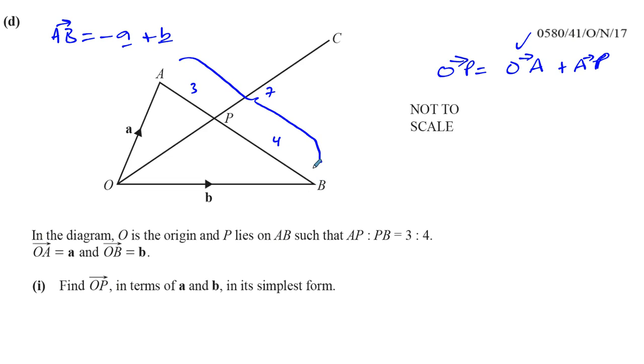Okay, and I know that A to P is a fraction of that. A to P is a fraction of A to B, and you can see the fraction of A to B that A to P is 3 parts out of a total of 7. So A to P is 3 out of 7 of what A to B is, which is minus A plus B. So now I can put that all together. O to A is A, and I'm going to have plus 3 sevenths times minus A plus B.